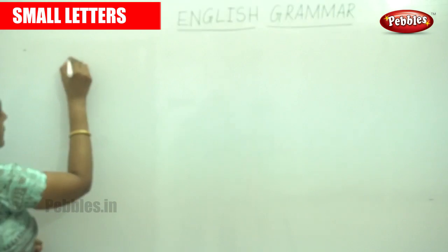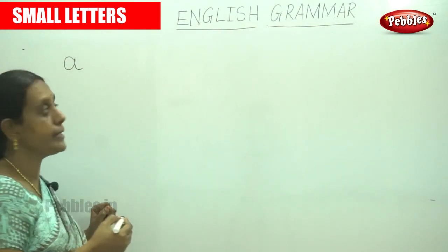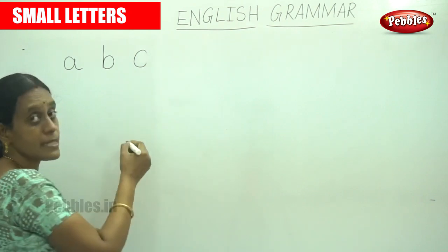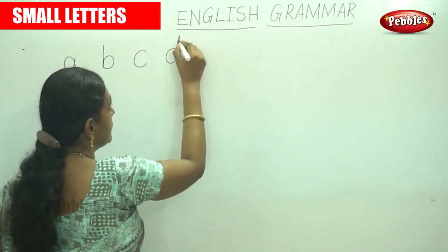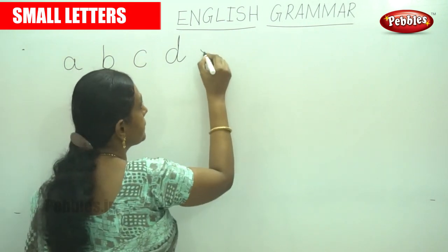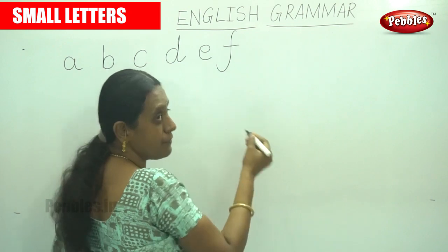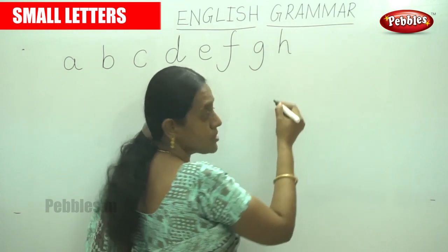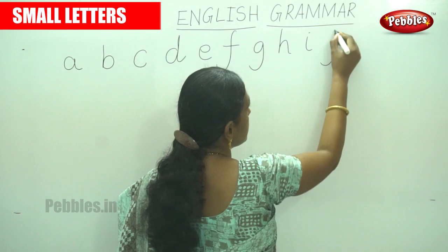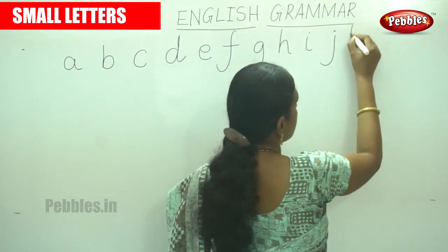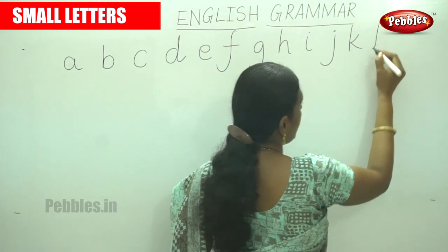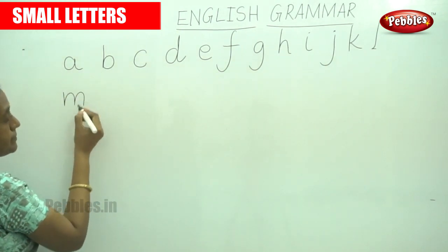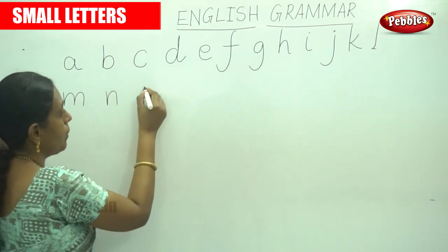Let me write — this is A, small letters. So A, B, C, D, E, F, G, H, I, J, K, L, M, N, O.